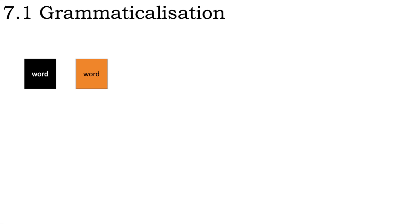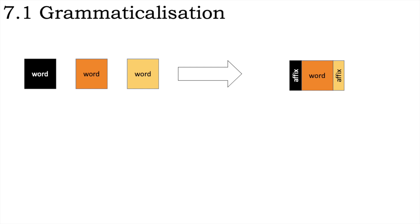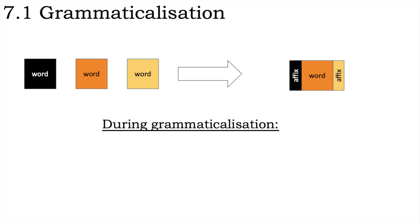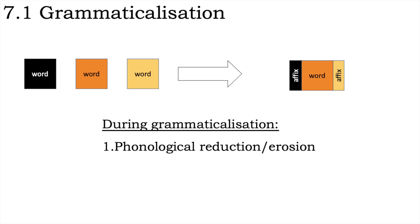Before getting into the discussion, it's important to know the basics of what grammaticalisation is. Grammaticalisation is the evolution of formally independent words into grammatical markers, often clitics or affixes. During the process of grammaticalisation, two things tend to happen. The first is phonological reduction or erosion of the word, clitic, or affix, which is often irregular. And the second is semantic bleaching, where much of the specific meaning of the original word is lost, as it comes to indicate broader grammatical relationships instead.